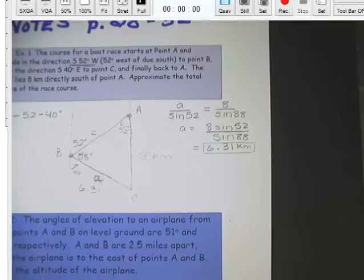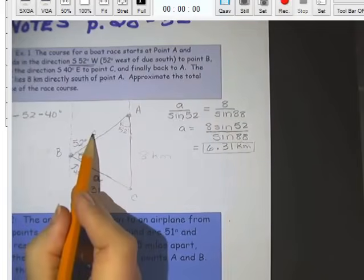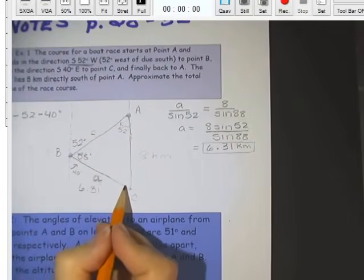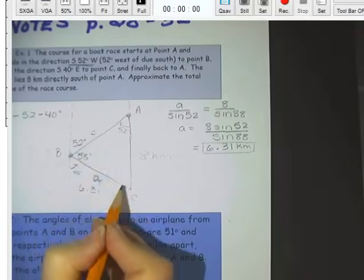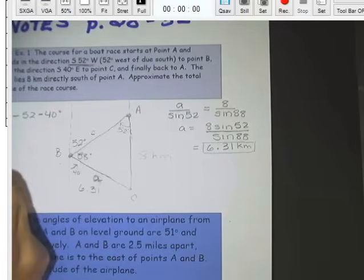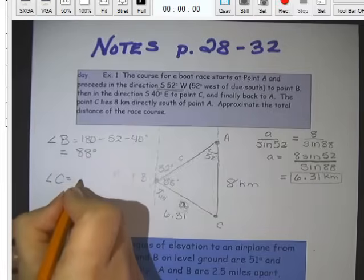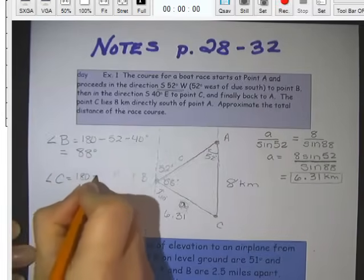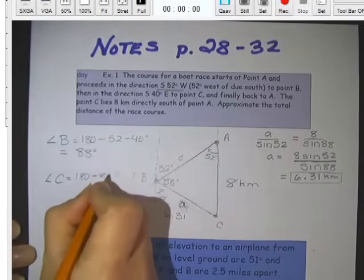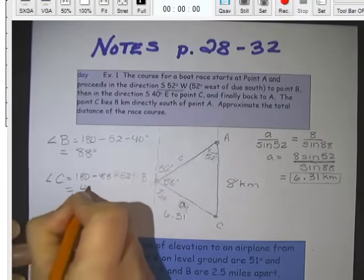So now we need to find little C. We're going to find little C still using law of sines. We're going to have to have angle C, the angle across from it. And of course there's 180 degrees in a triangle. So angle C is going to be 180 minus the 88 minus the 52, which will be 40 degrees.